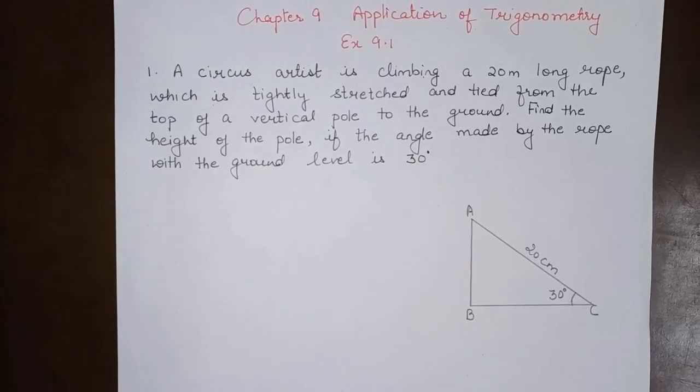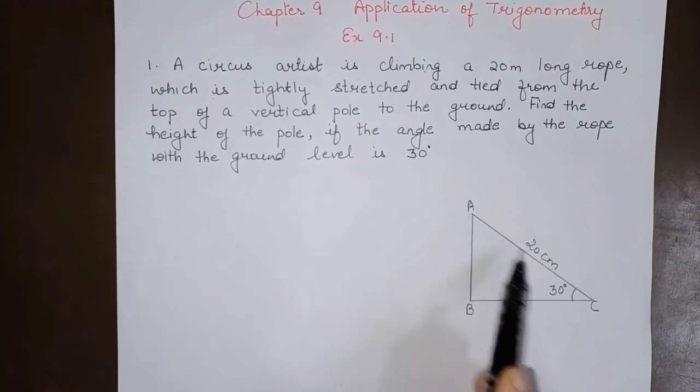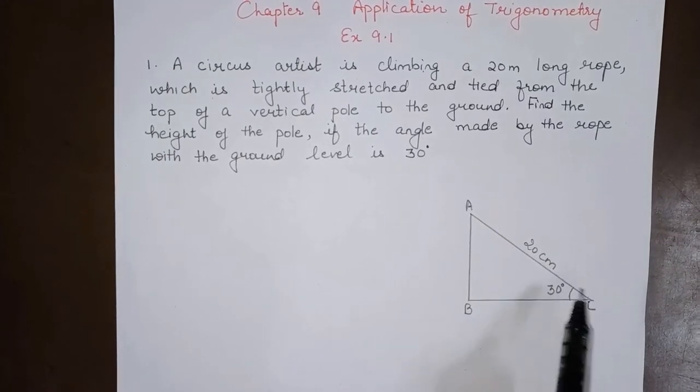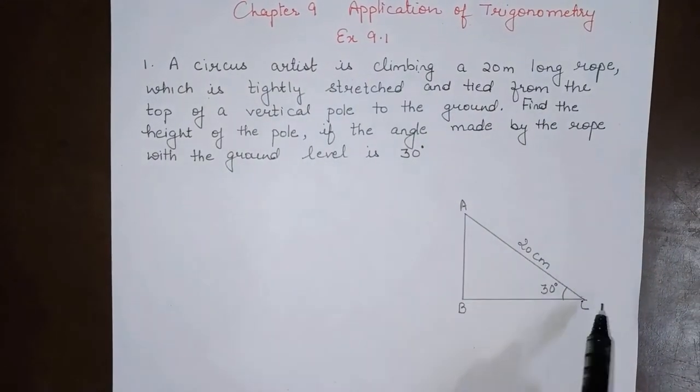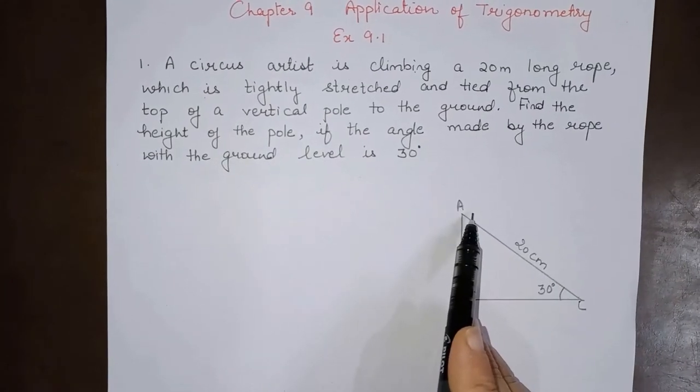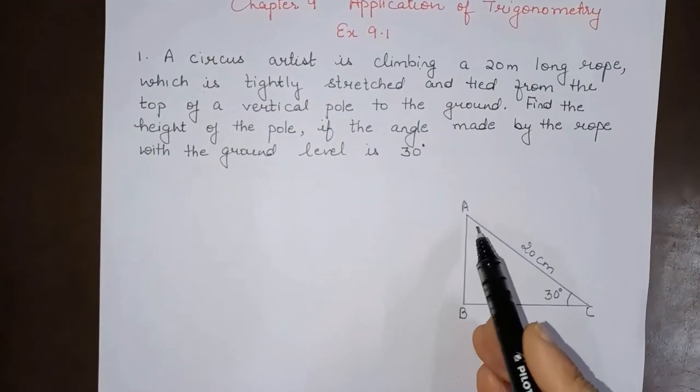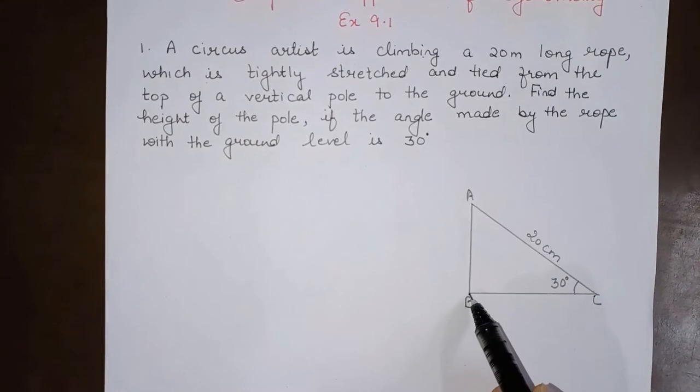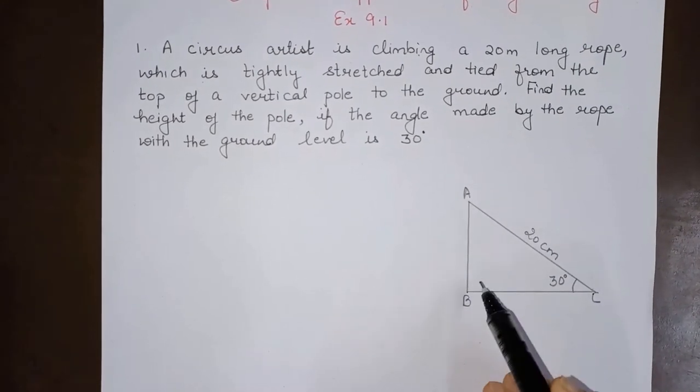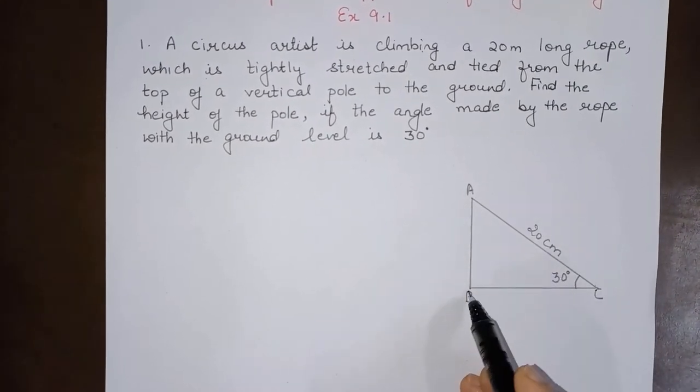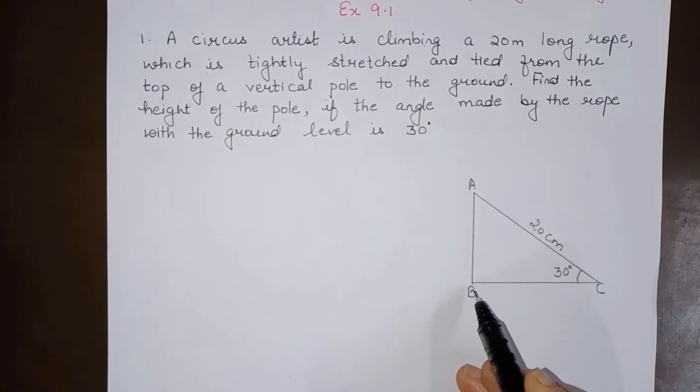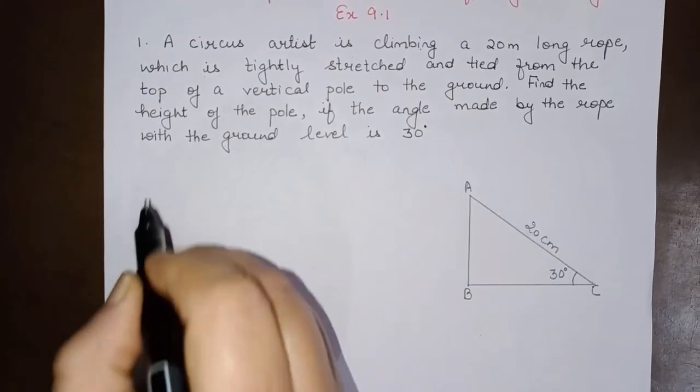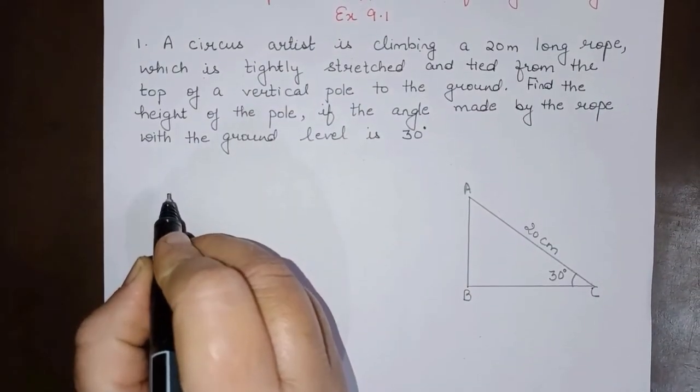...is 30 degrees. Now here, this is the rope. AC is the rope and the circus artist is climbing this rope which is tied to the top of a vertical pole. We have to find the height of the pole, that is, we have to find AB here in this case.